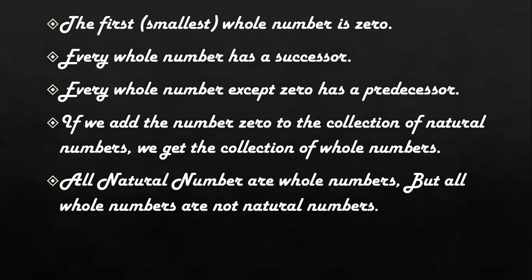If we add the number zero to the collection of natural numbers, we get the collection of whole numbers. All natural numbers are whole numbers, but all whole numbers are not natural numbers.